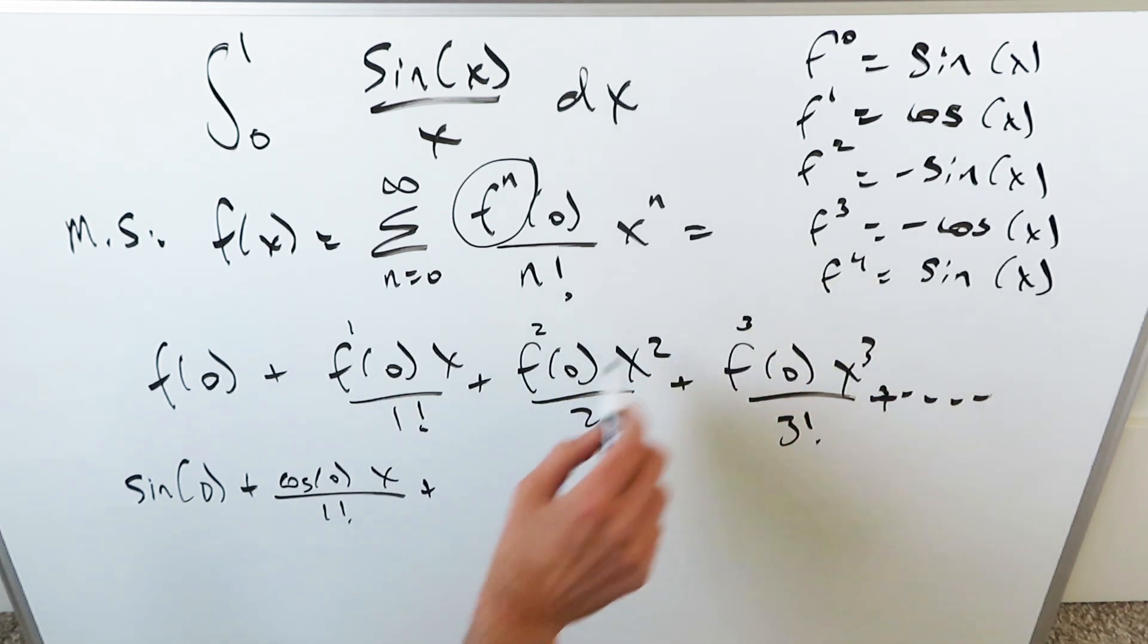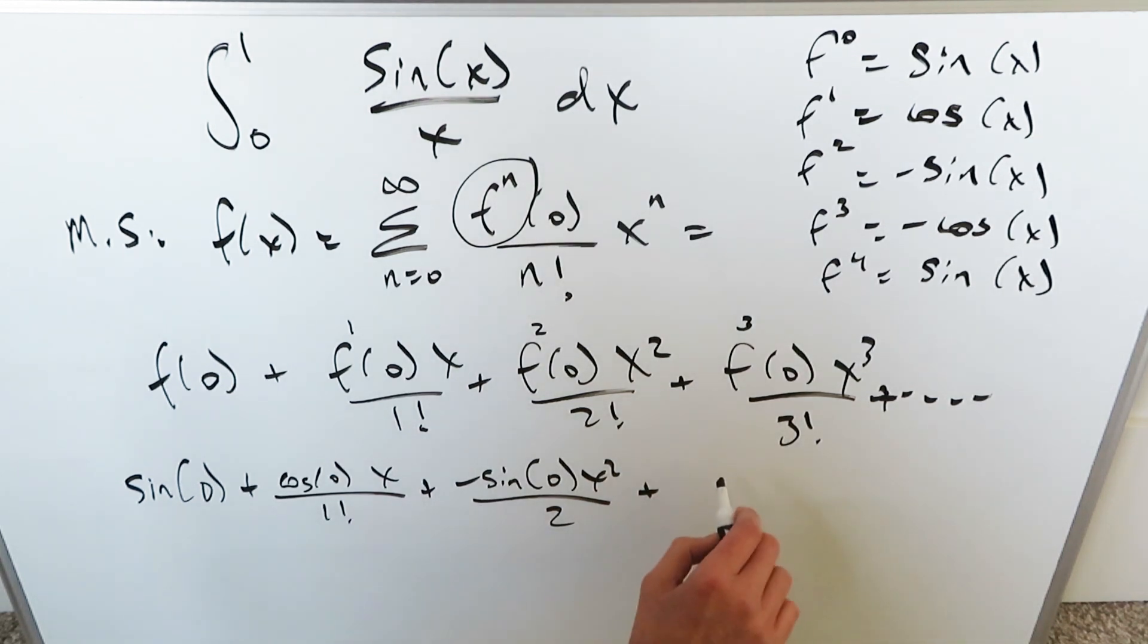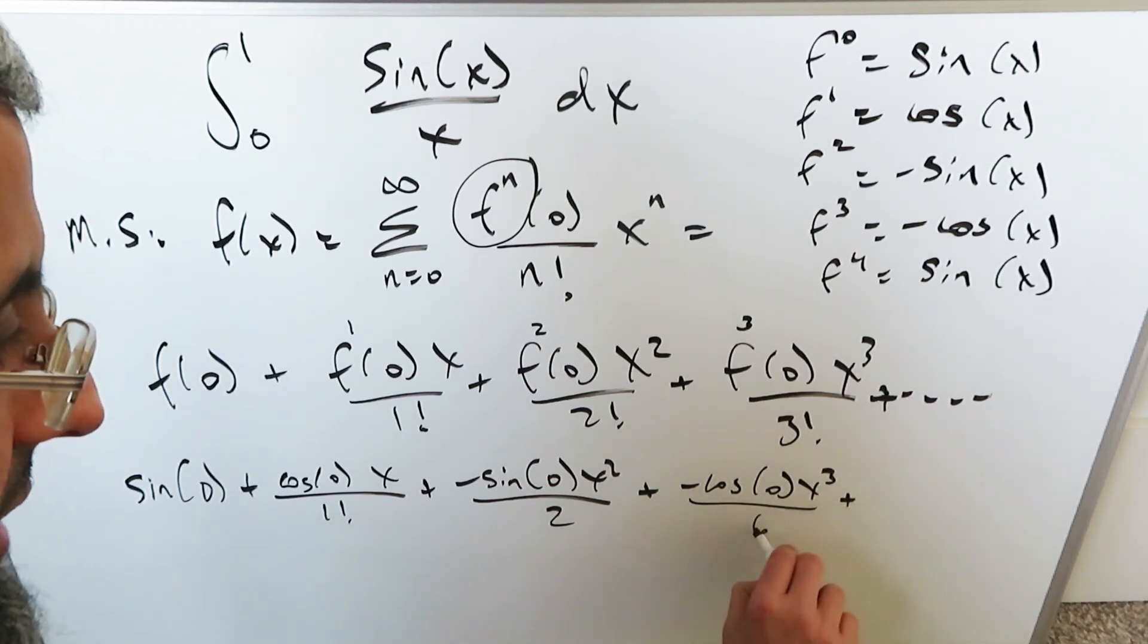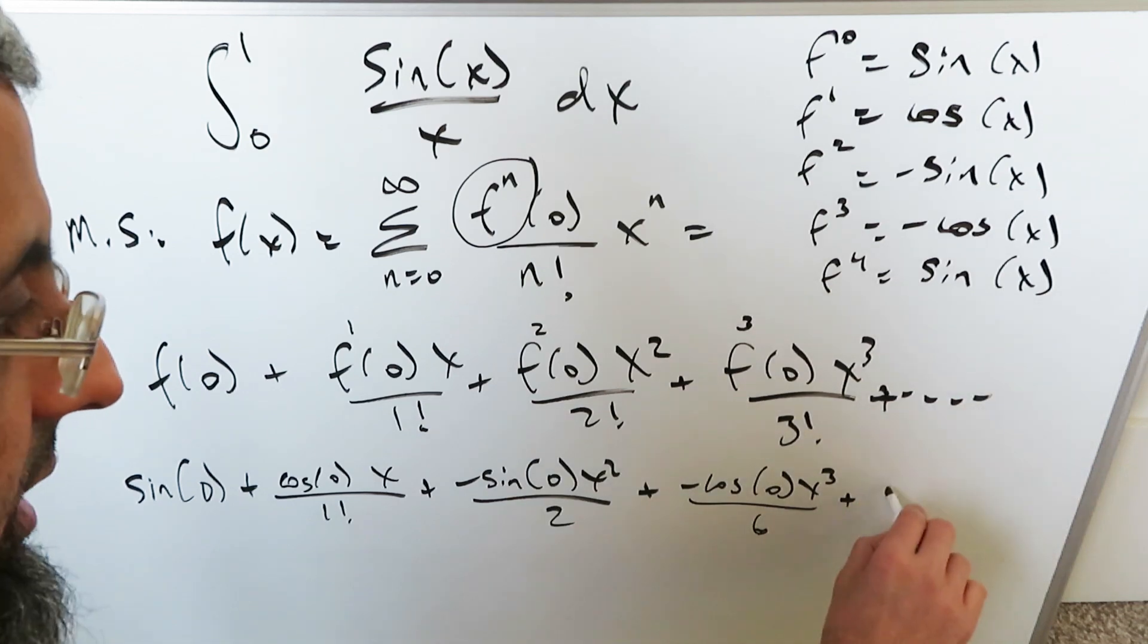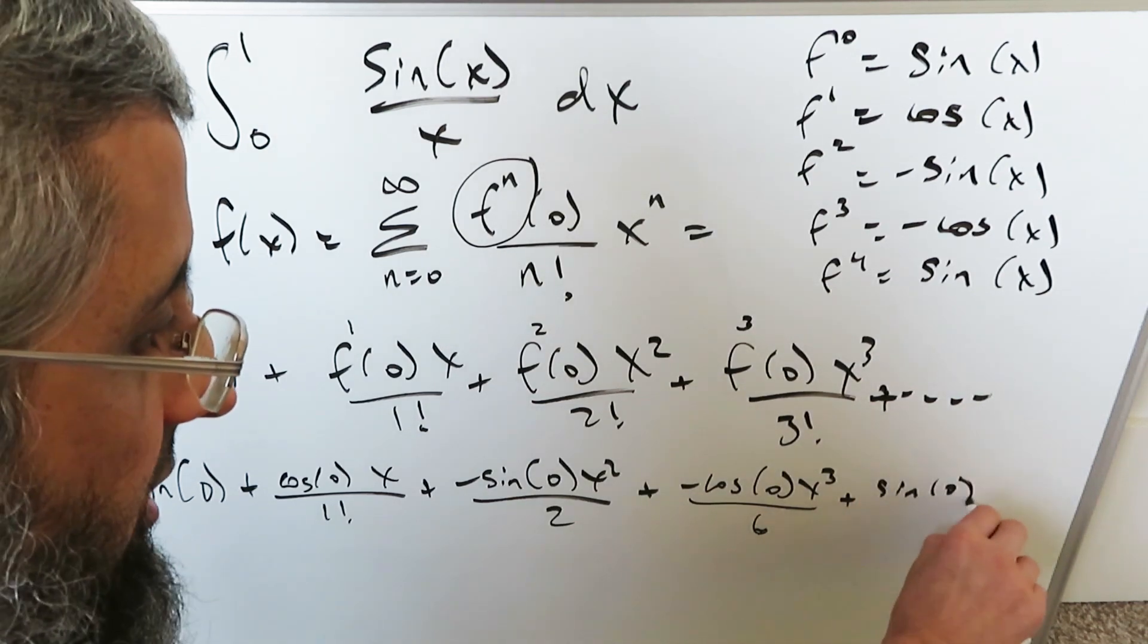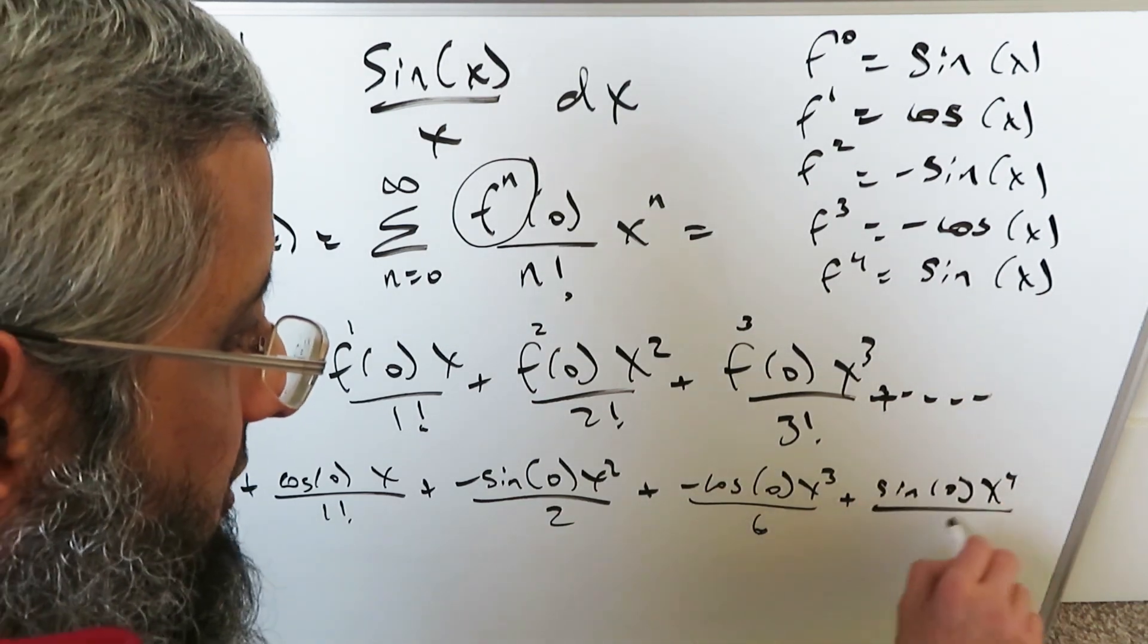Then the second order derivative: I have a minus sine with zero coming in it, x squared over 2 factorial, which is 2. Then I'm looking at a minus cosine with zero in it, and then x cubed over 3 factorial, which is 6. Then we can bring one more item: sine with zero coming in it, x to the 4 over 24.